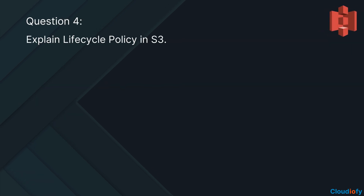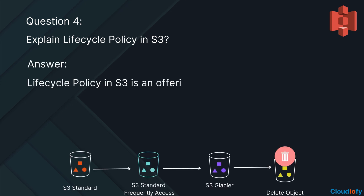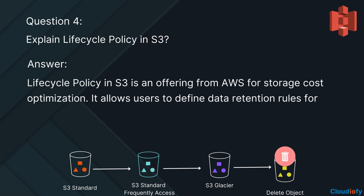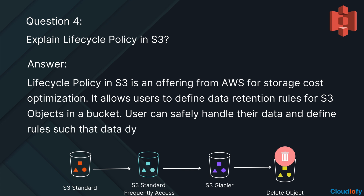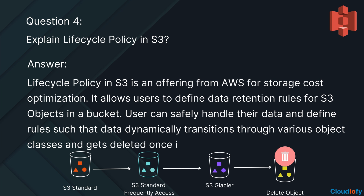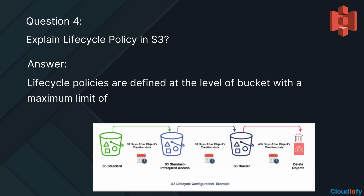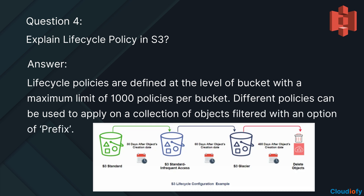The next question is: explain the lifecycle policy in S3. Lifecycle policy in S3 is an offering from AWS for storage cost optimization. It allows users to define data retention rules for S3 objects in a bucket. Users can safely handle their data and define rules such that data dynamically transitions through various object classes and gets deleted once it is no longer needed. Lifecycle policies are defined at the bucket level with a maximum limit of 1000 policies per bucket. Different policies can be applied to a collection of objects filtered with an option of prefix.